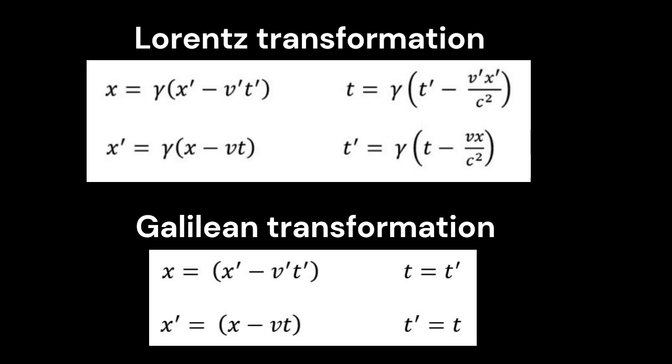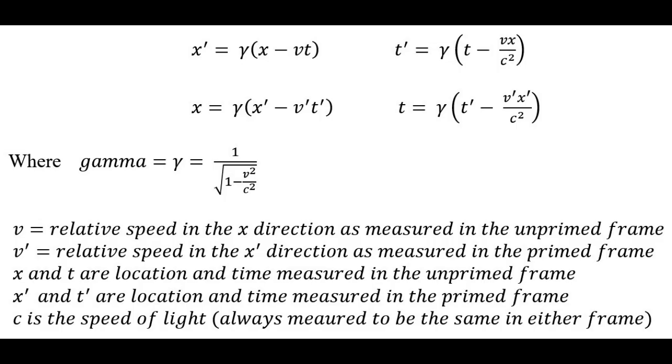So it's easy to see in the equations different elements of our constructive model being represented. And just for completeness, here's the complete description of the Lorentz transformation with the equations I just showed you, but also defining what gamma is, and what each of the other terms is there in words, just for a complete description.